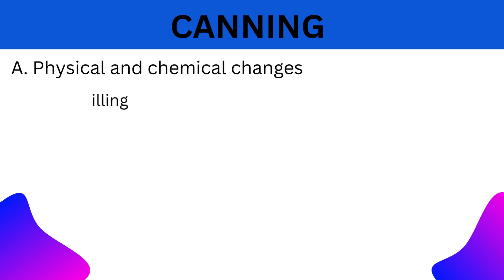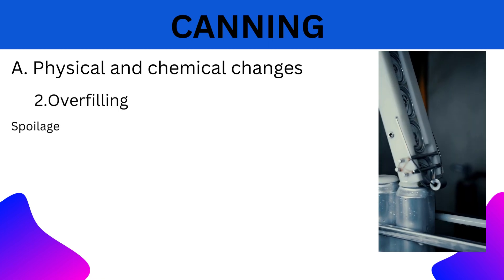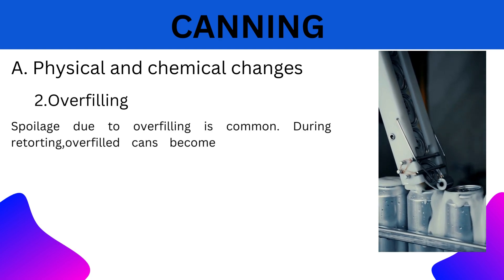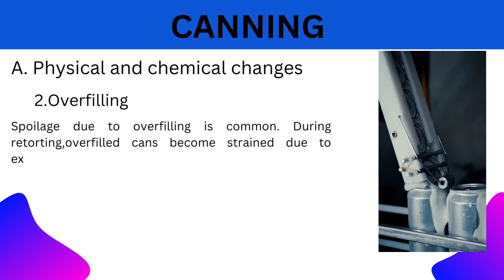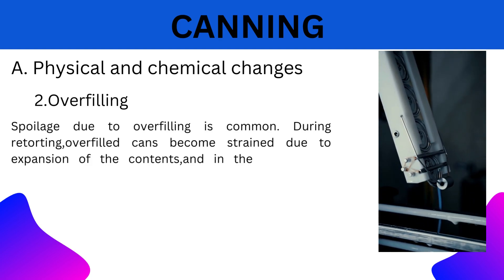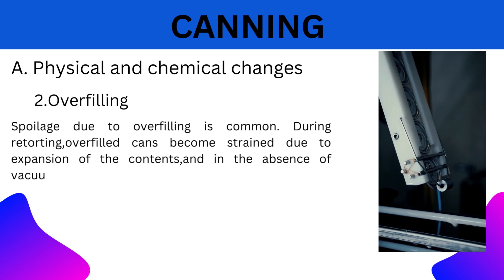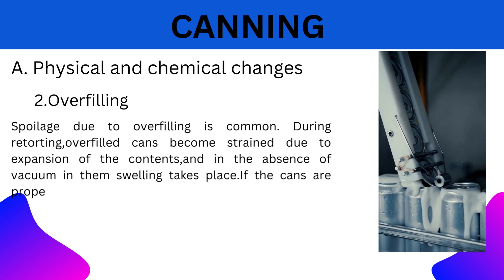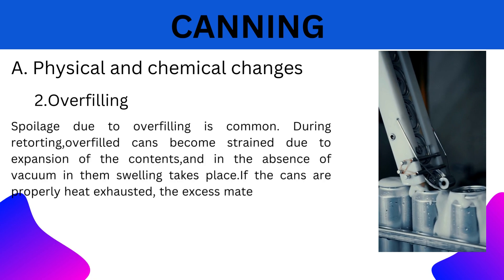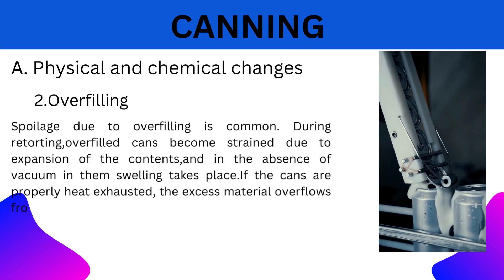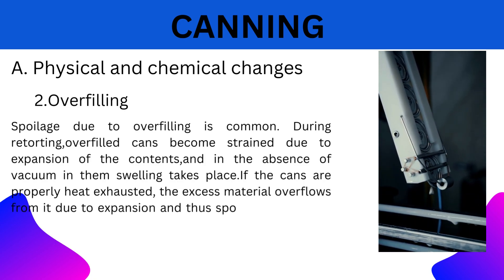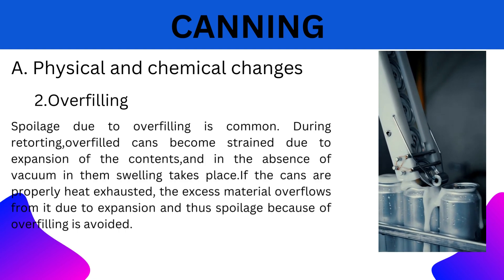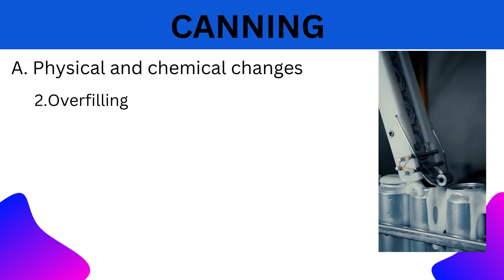6. Overfilling: Spoilage due to overfilling is common. During retorting, overfilled cans become strained due to expansion of content. In the absence of vacuum, swelling takes place. If the cans are properly heat-exhausted, the excess material overflows due to expansion, and thus spoilage because of overfilling is avoided.